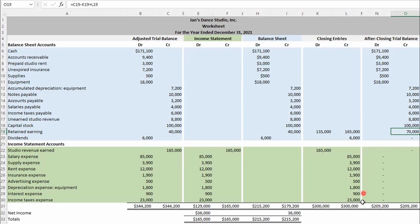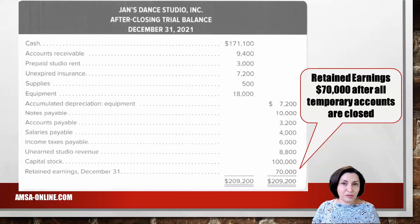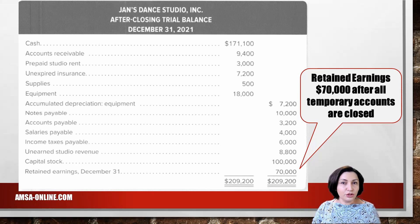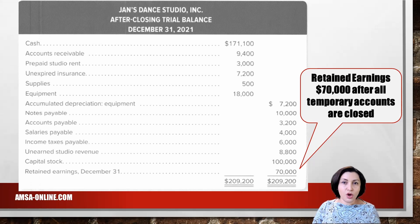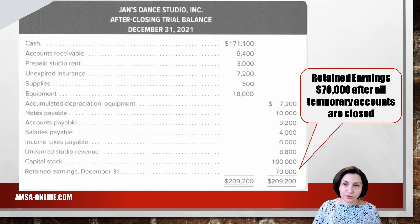Note that total debits must equal total credits. We are done with the worksheet. Let's review the after-closing trial balance and compare it with the worksheet. The numbers in the after-closing trial balance are the same as on the worksheet. There are no revenue, expenses, or dividends on the after-closing trial balance. The balance in the retained earnings account is $70,000.